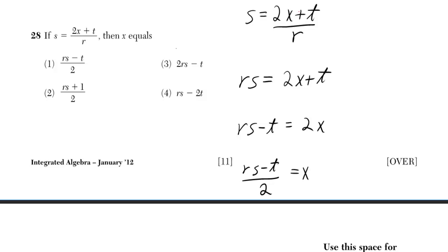If we start with s equals 2x plus t over r, and we just want x equals, then we want it to eventually look like that at the end. So you can start by saying, I know it's got to look like x equals, and then there's got to be something on the other side.